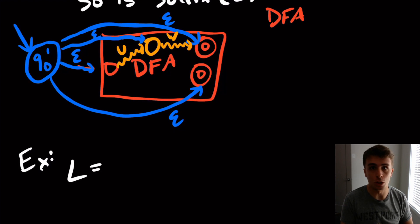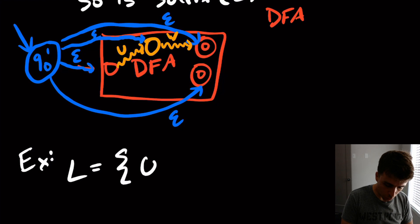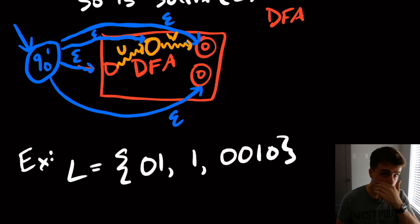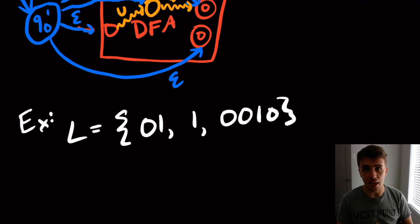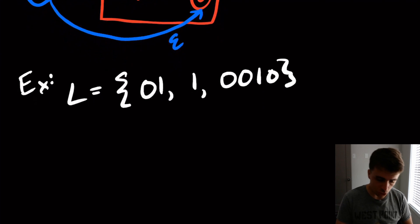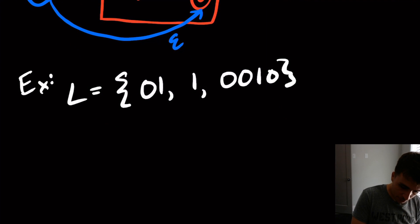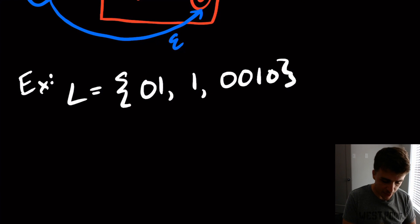I'm going to make it a finite language so we can actually see what the actual suffix language should be and then actually make the NFA and then the corresponding DFA for it. So I'm going to have the language 01, 1, and 00103. So just those three strings. We can easily make an NFA for just these three strings by making a small NFA for each one of them and then unioning them all together.